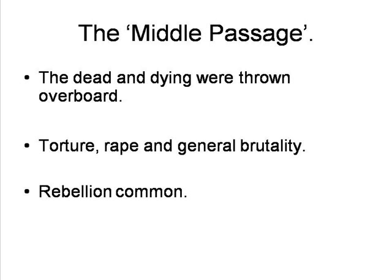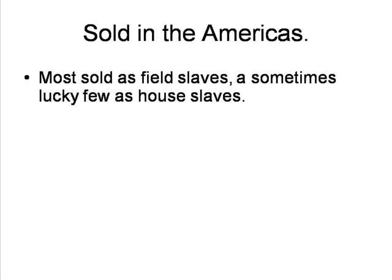Female slaves were often raped. Despite close surveillance, shipboard mutinies were common. Finally, the slaves reached the Americas, where they were cleaned and prepared for sale to individual owners. The choice of their future employment depended on the whim of those who purchased them. Most were sold to planters as field slaves, but a minority became house slaves, including some who were taken on to Europe as servants.